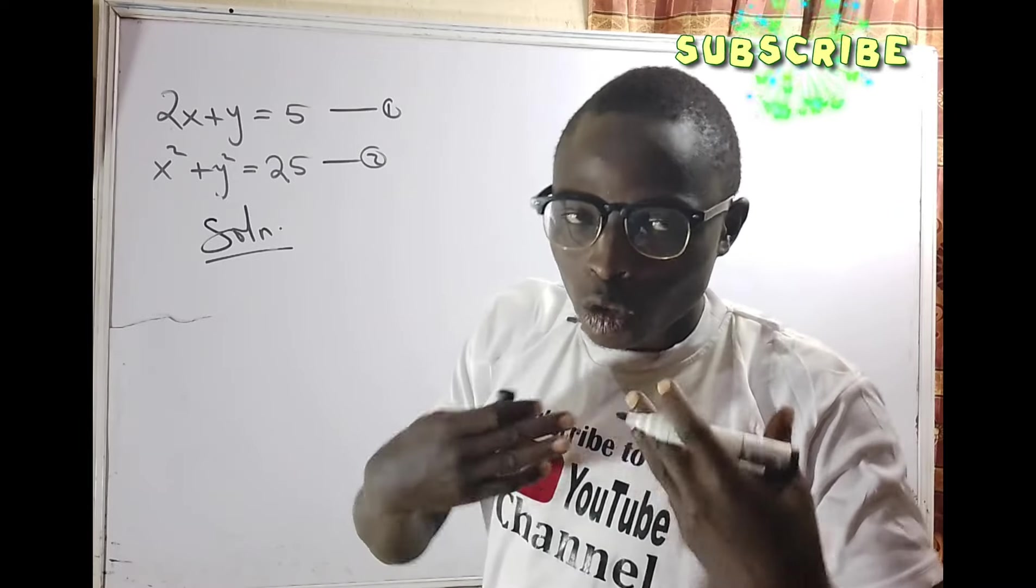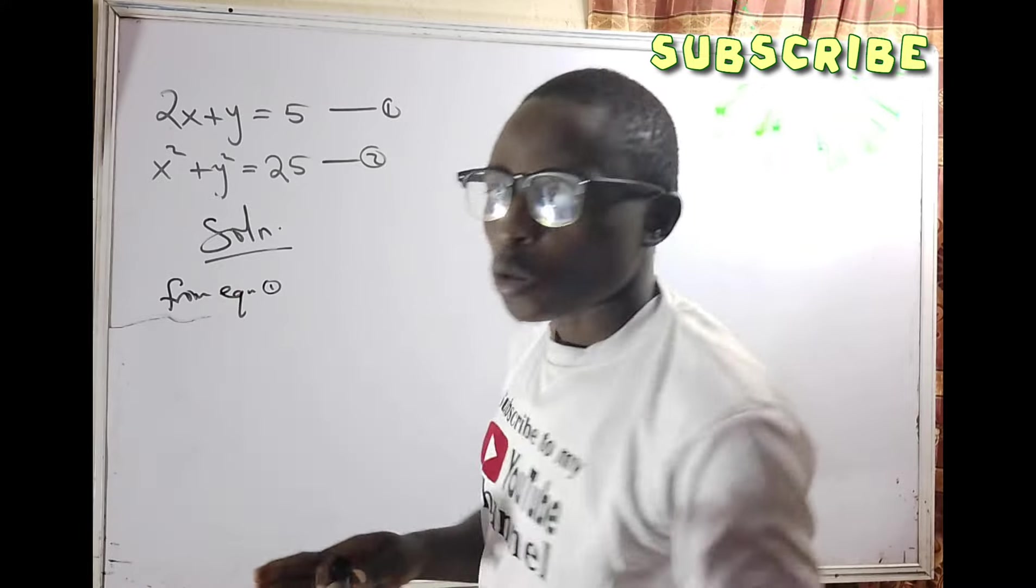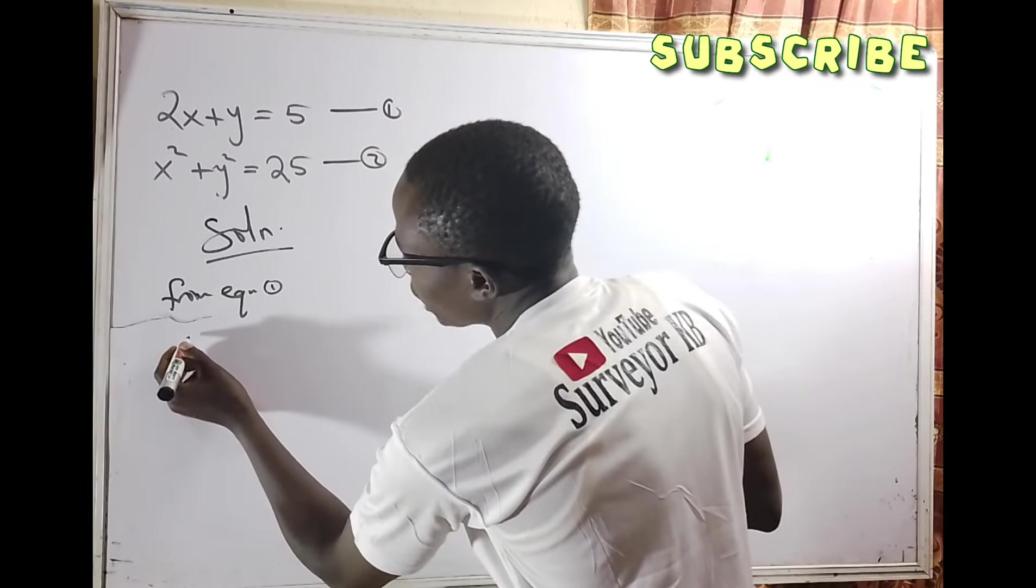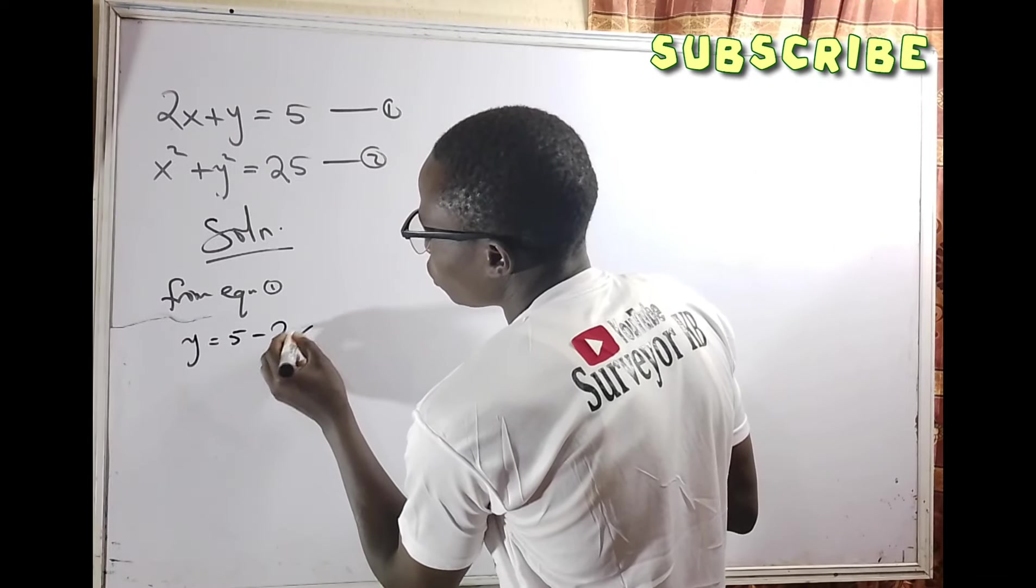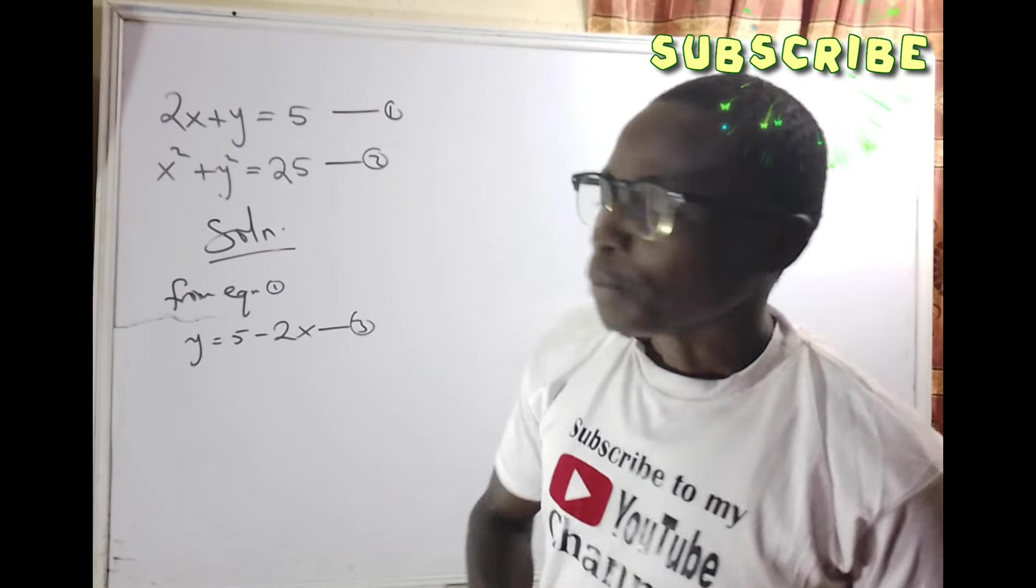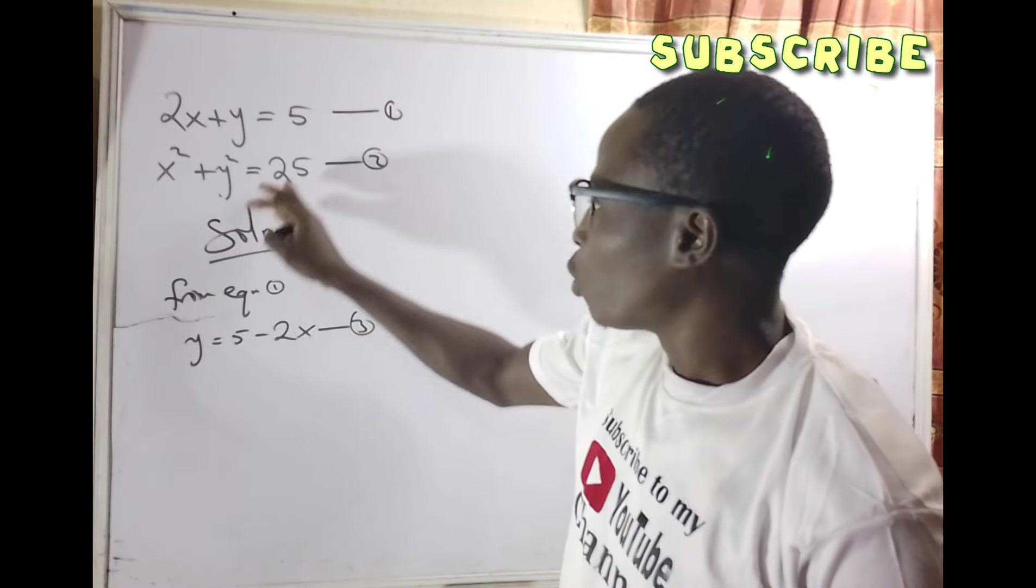Let's start from equation 1. Let's make y the subject of the formula in equation 1. That means we are going to have y equals 5 minus 2x. Let's call it equation 3.